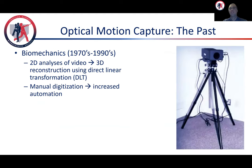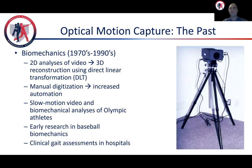The 1970s to the 1990s were a time of transformation for optical motion capture and biomechanics. 2D analyses of video with manual digitization gave way to 3D reconstruction with a greatly increased level of automation. The late 70s and the 80s saw a concerted effort among the U.S. Olympic Committee to capture high-speed video of its athletes in the hopes of analyzing them and improving their performance.